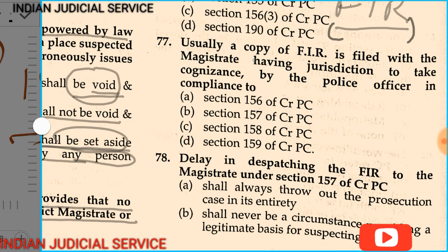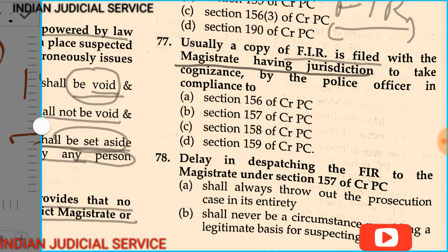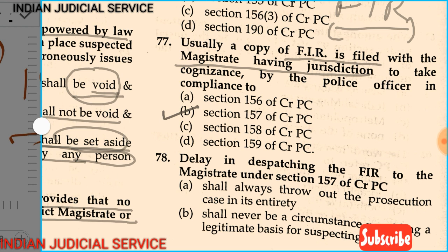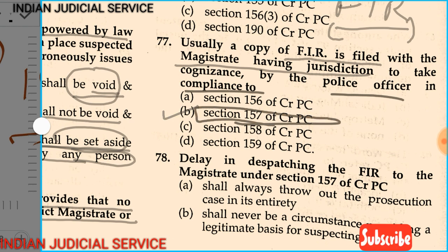Question 77: Usually a copy of FIR is filed with the magistrate having jurisdiction to take cognizance by a police officer in compliance to section 156, 157, 158, or 159. The answer is section 157. Section 157 of CRPC provides the procedure for investigation and sending the FIR copy to the magistrate.